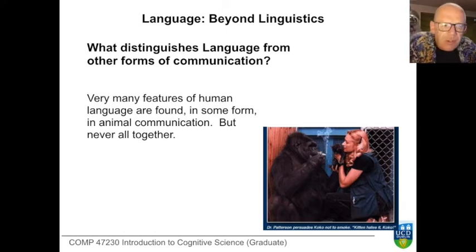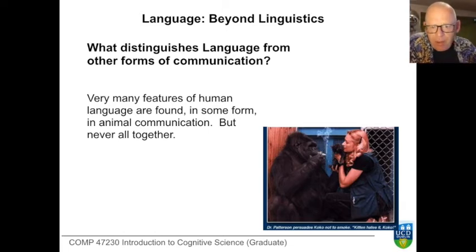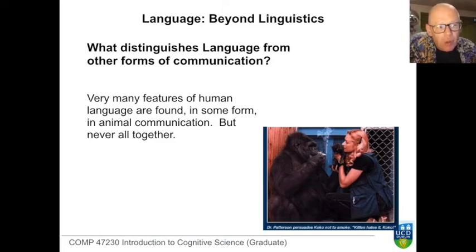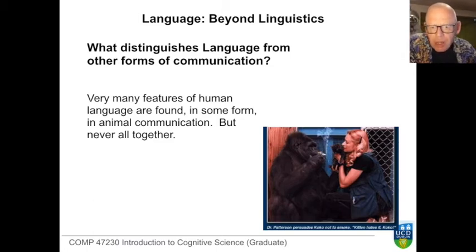We turn now to ask, in what way is human language clearly different from other forms of communication among animals? All forms of life communicate — trees communicate, bacteria communicate — so what we're asking is: is there any single feature that identifies human language as qualitatively different from other forms of animal communication? This turns out to be a very hard question to answer.